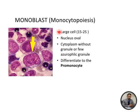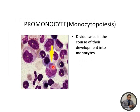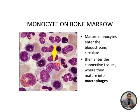The monoblast is a large cell measuring 15 to 25 microns with an oval-shaped nucleus. Its cytoplasm is without granules, or sometimes has granules. It differentiates into the promonocyte, which is smaller than the previous stage and has a somewhat irregular nucleus. It divides twice during development into monocyte. The final stage — monocyte — is the largest cell with an irregular nucleus and bluish-gray cytoplasm. It circulates in the bloodstream and matures into macrophages when it enters connective tissue.